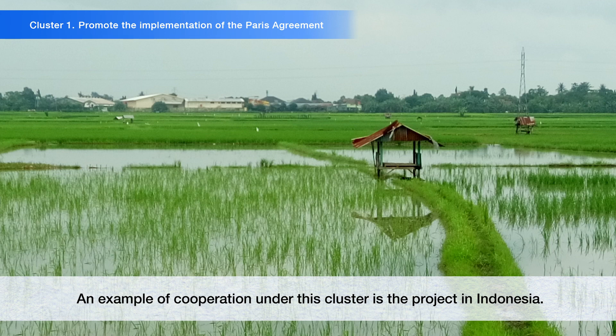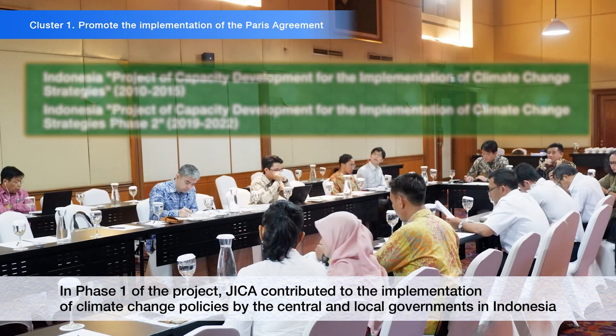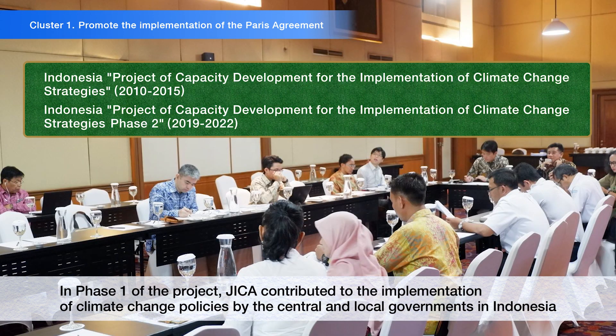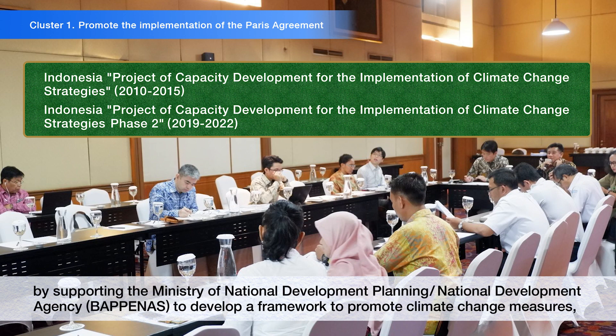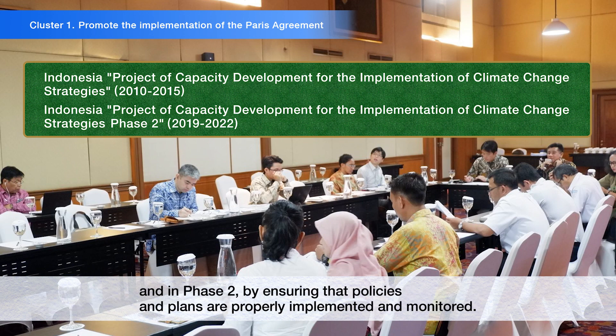An example of cooperation under this cluster is the project in Indonesia. In Phase 1, JICA contributed to the implementation of climate change policies by the central and local governments in Indonesia by supporting the Ministry of National Development Planning and National Development Agency to develop a framework to promote climate change measures, and in Phase 2 by ensuring the policies and plans are properly implemented and monitored.